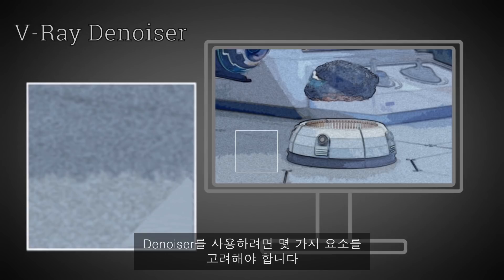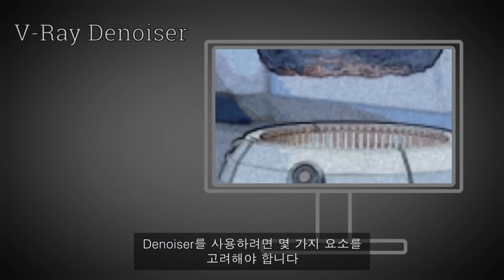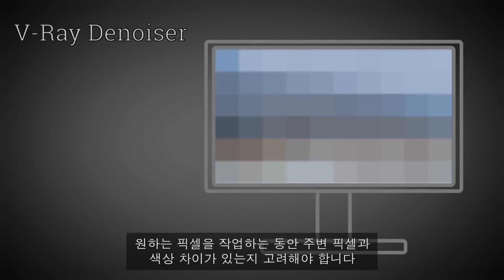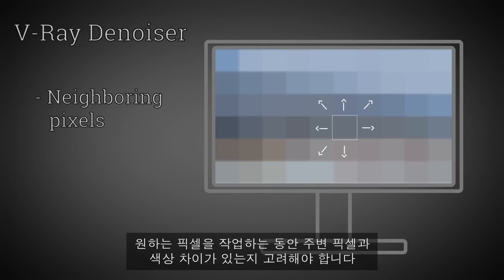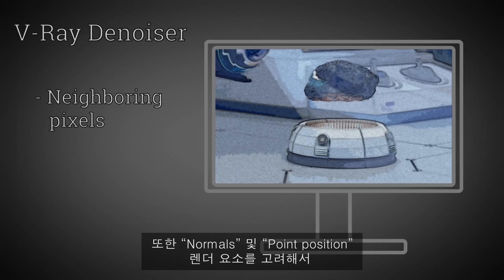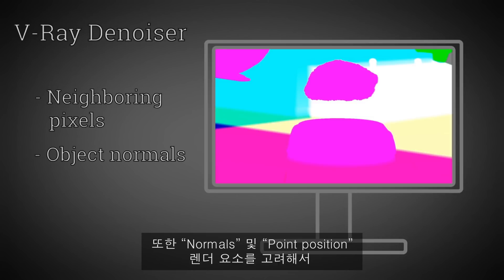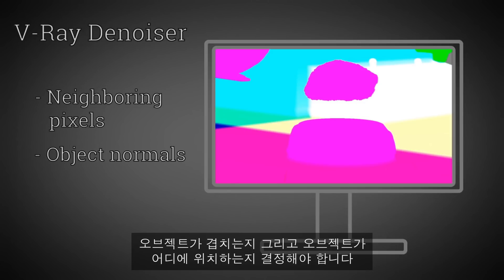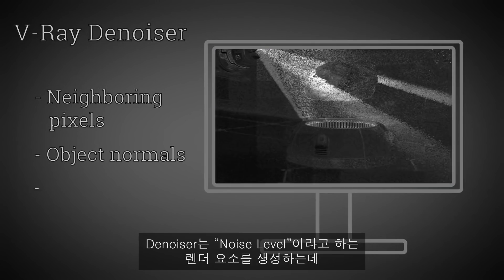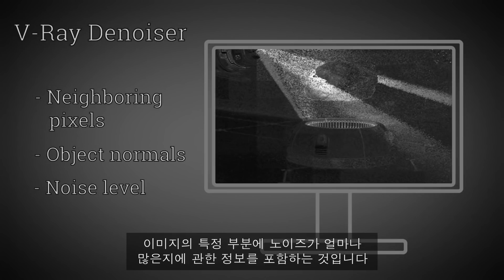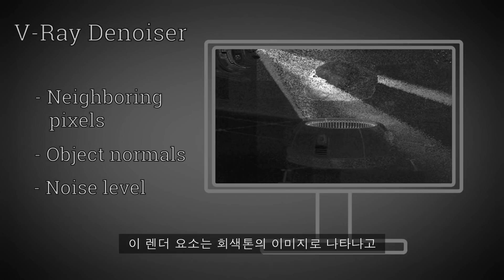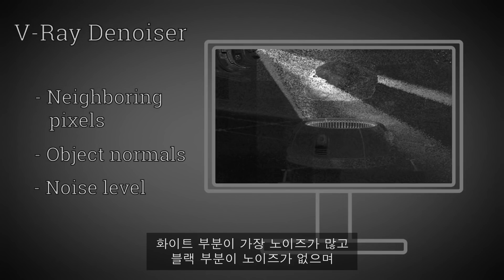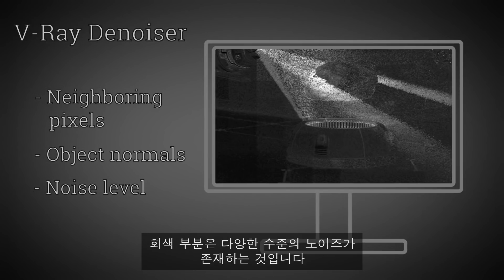The Denoiser works by taking into consideration several factors. While working on a pixel of interest, it looks around its neighboring pixels to determine if there is a difference in the color. Also, it looks into the normals and point position render elements to determine if objects are overlapping and generally where in space they are located. The Denoiser generates a render element called Noise Level, which contains information about how noisy a certain area of the image is. This render element is a grayscale image where the white areas have the most noise, black areas have no noise, and grey areas have varying levels of noise.